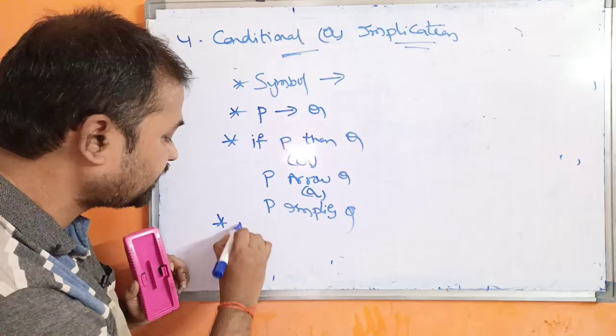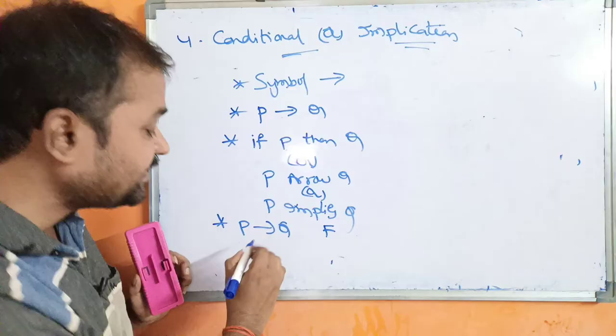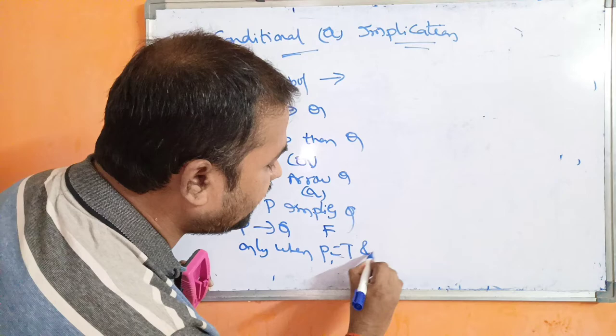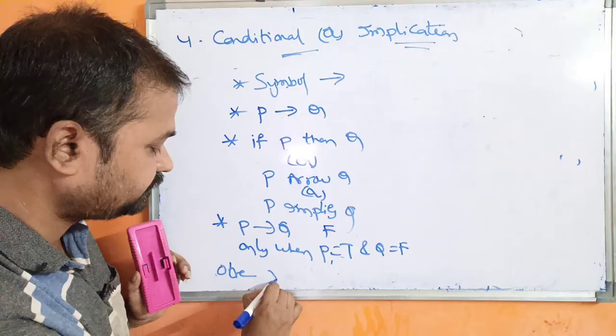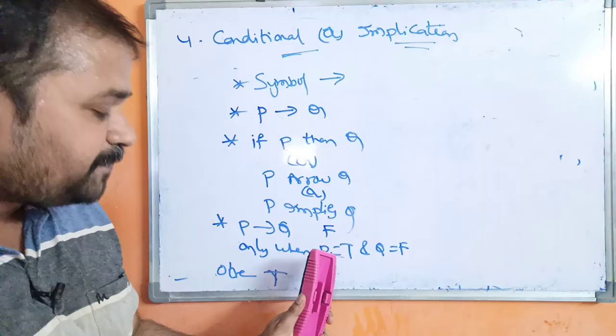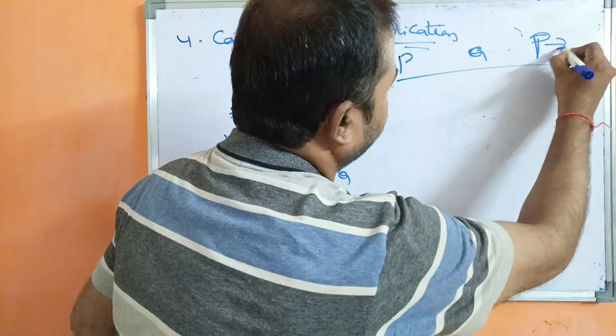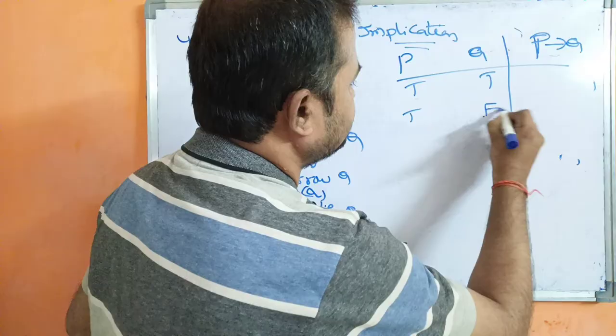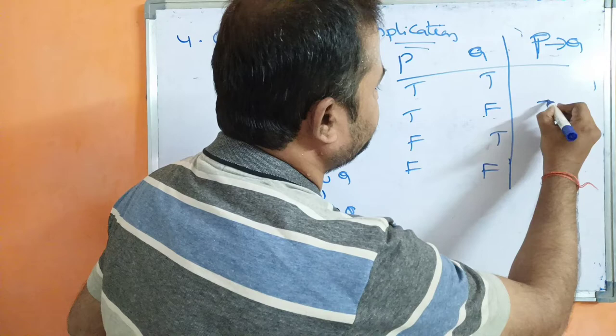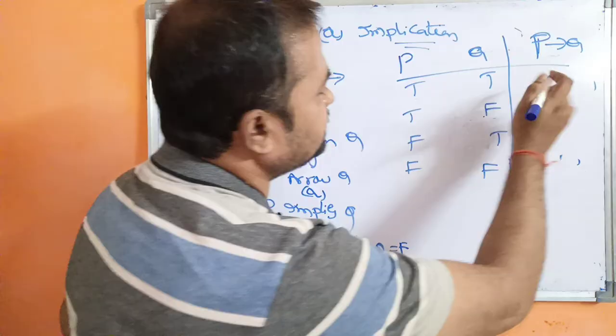P→Q returns false only when P is true and Q is false. Otherwise, it returns true. Truth table: true-true gives true; true-false gives false; false-true gives true; false-false gives true. So when P is true and Q is false, then P→Q is false. Otherwise, the result is true.